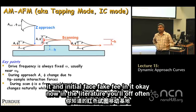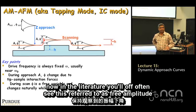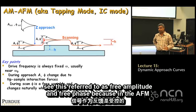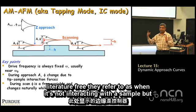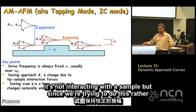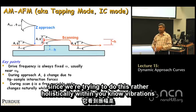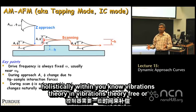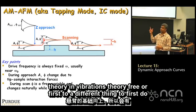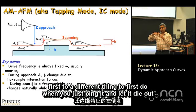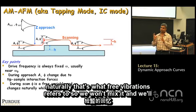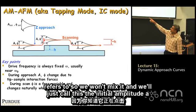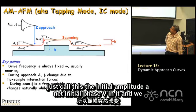In the AFM literature this is often called the free amplitude and free phase, meaning not interacting with the sample. However, since we are treating this within vibrations theory — where 'free' refers to undriven ring-down oscillations — we avoid that terminology and simply call these the initial amplitude A_init and initial phase φ_init.